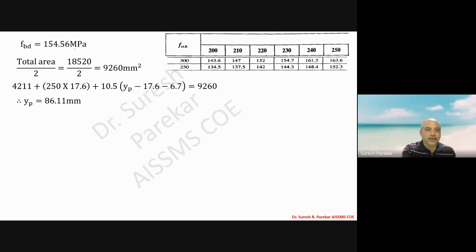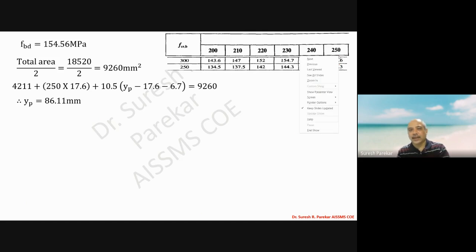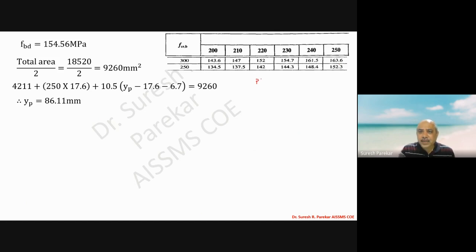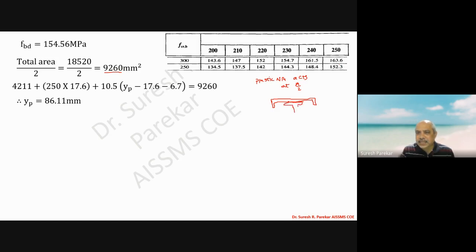Now we find Zp of the total section. The plastic neutral axis acts at A/2, so each half area is 9260 mm squared. The section consists of the ISWB 550 beam with the ISLC 300 channel on top. The plastic neutral axis distance yp from the top is found to be 86.11 mm.